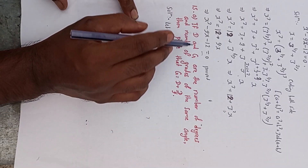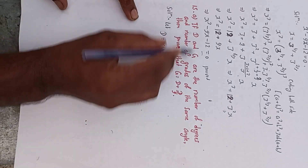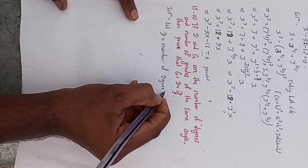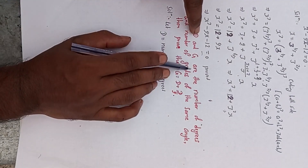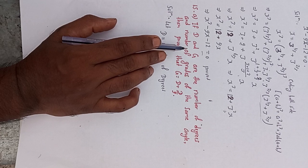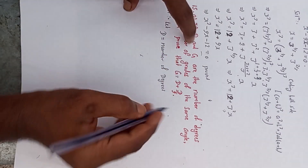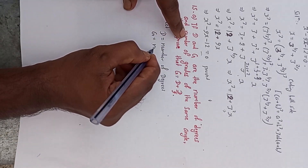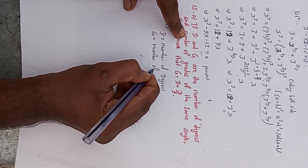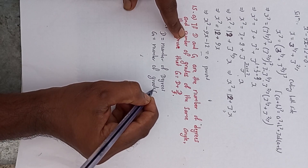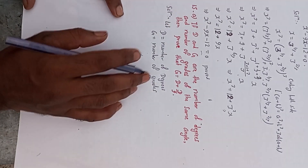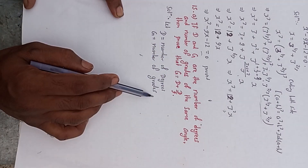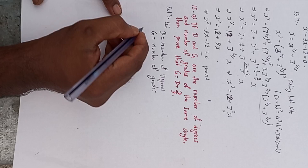Here, d and g are the number of degrees and grades respectively. So d is equal to number of degrees, and g is equal to number of grades. Now we will start from the main formula.